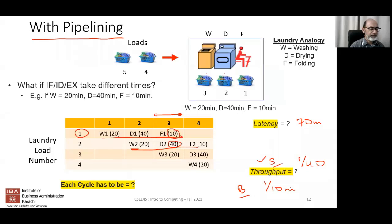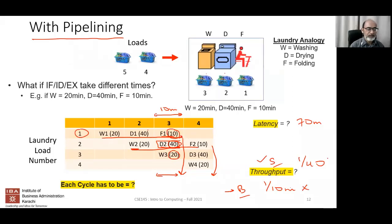The stages are folding = 10 minutes, drying = 40 minutes, washing = 20 minutes. Bilal's answer of one per 10 minutes would only be correct if every stage were 10 minutes long. But since the dryer takes 40 minutes, you can't bring in the next load until it finishes. The cycle duration is the maximum of all stage times — 40 minutes. So throughput is one laundry load per 40 minutes.